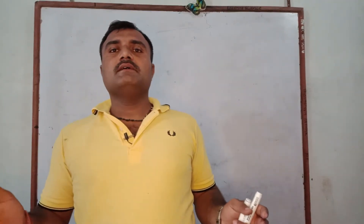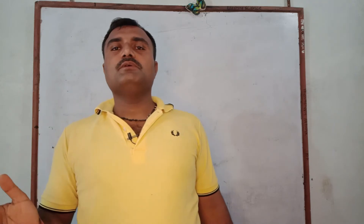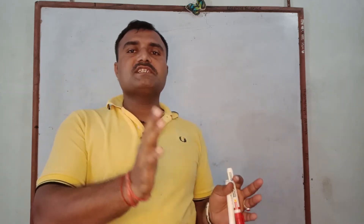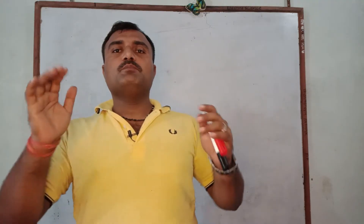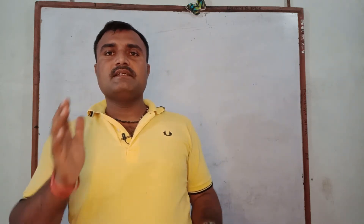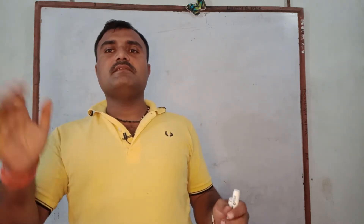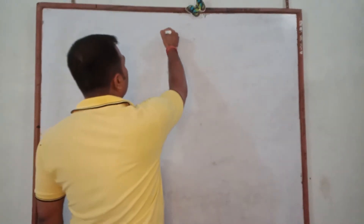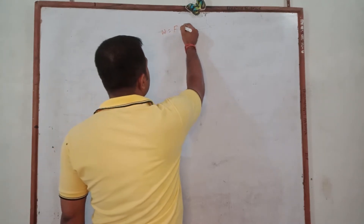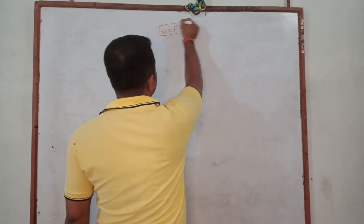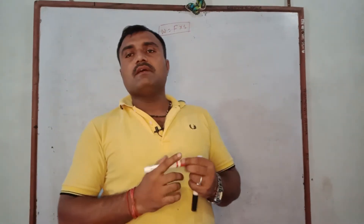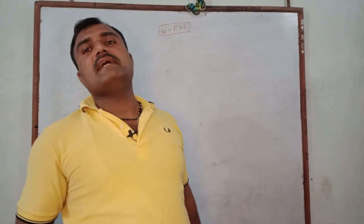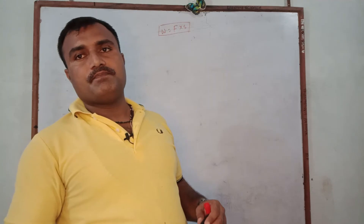Hello students. In my previous video I described work, and we discussed that if force applied on an object displaces it, then work is said to be done. We can calculate work done as equal to F into S, or W = Fs. The factors on which work depends are force applied and displacement produced.